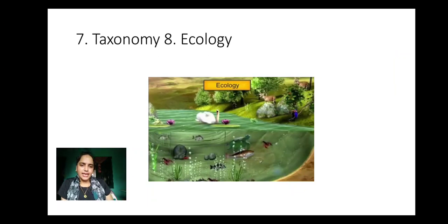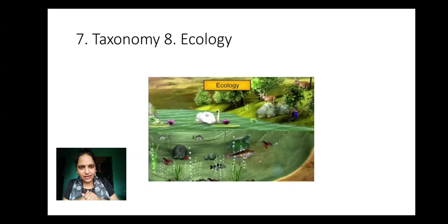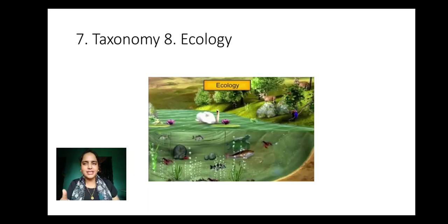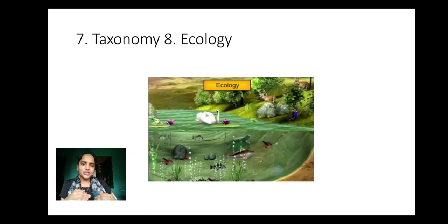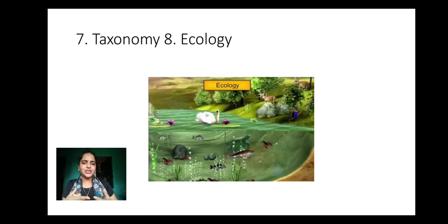Next we have taxonomy. In taxonomy, they identify an organism, place it in a certain group, and give a name to the organism. So taxonomy is the branch of biology which deals with the identification, naming and placing of an organism into a particular group. And ecology is the branch of biology which deals with the study of living organisms and their relationship with the environment — the relationship of plants and animals with each other, and their relationship with physical factors or physical environment.